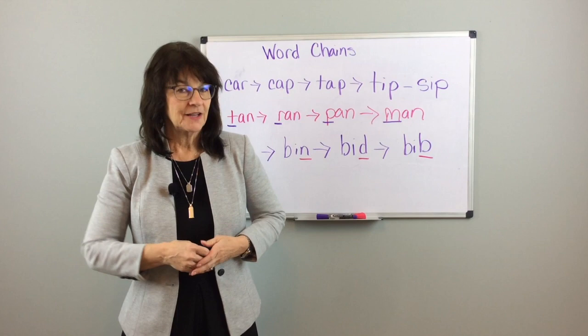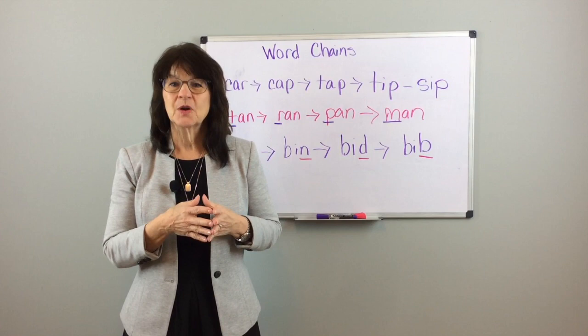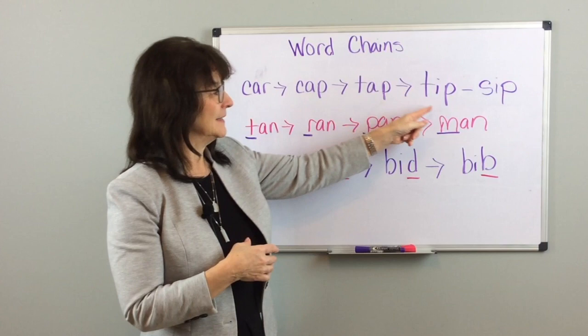You can do what is called a word chain. It is so simple. You simply change one letter in the word to make it easy for the student to be more automatic with their word reading. So look what I've done here: car, cap, tap, tip, and sip.